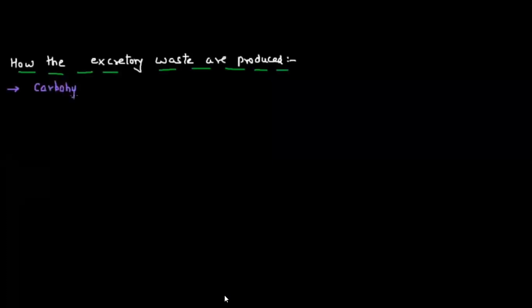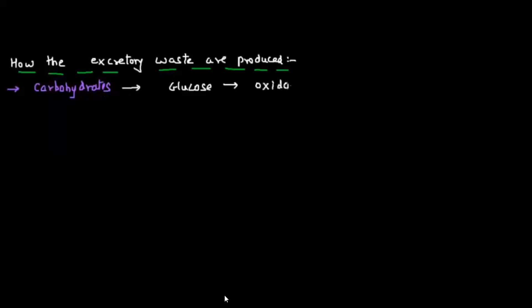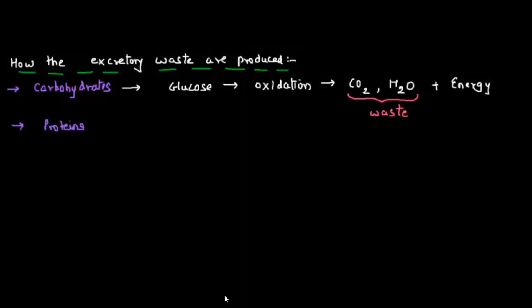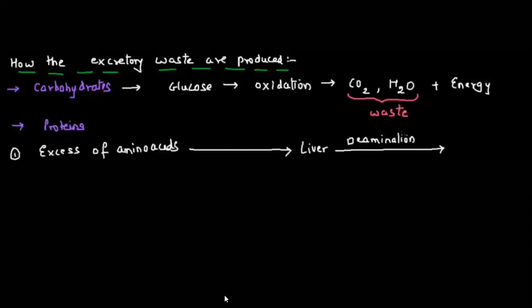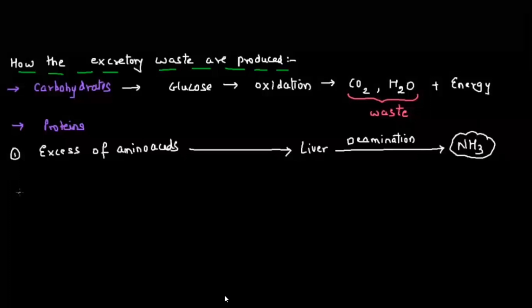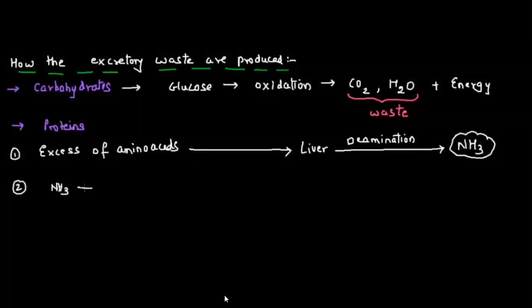How these excretory wastes are produced: carbohydrates are broken down to glucose, glucose undergoes oxidation and forms carbon dioxide and water as waste, which is eliminated through the lungs. Excess proteins are first broken down into amino acids, then those amino acids travel to the liver, where ammonia is formed by the process of deamination.